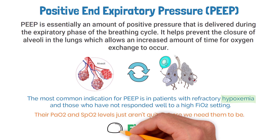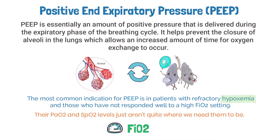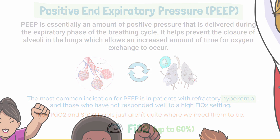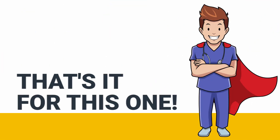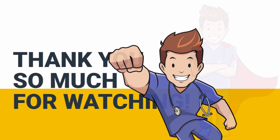The first thing you could do is try to increase the FiO2 setting. You can increase the FiO2 up to 60% to see if it fixes the issue. If not, and if the patient is still showing signs of hypoxemia, this is when you would want to initiate PEEP.